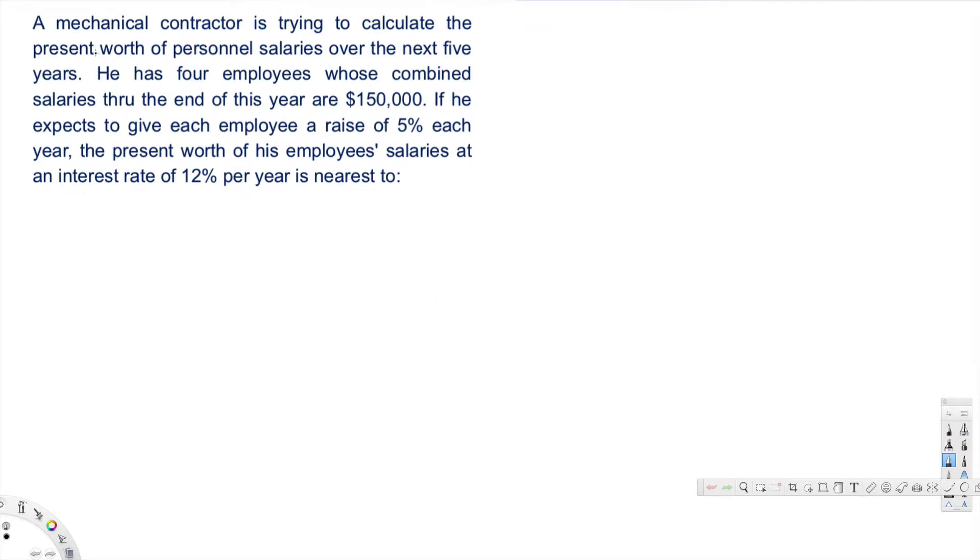What's going on guys, let's look at this problem right here. A mechanical contractor is trying to calculate the present worth of personal salaries over the next five years. He has four employees whose combined salaries through the end of the year are $150,000. If he expects to give each employee a raise of 5% each year, the present worth of his employees' salaries at an interest rate of 12% per year is nearest to what?